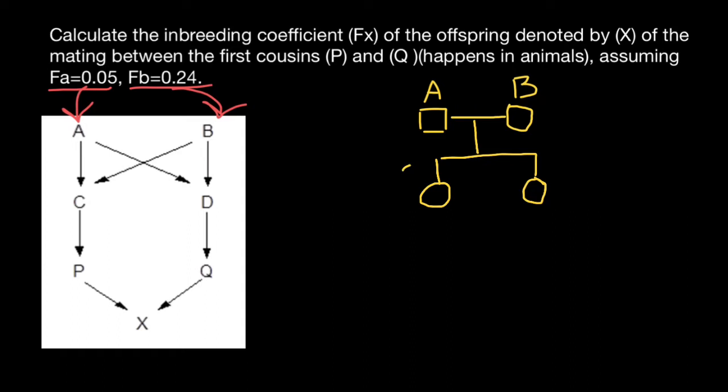So female C and female D are sisters. Now let's assume they got married. He's the husband of D, he's the husband of C. They're not shown here again because this is not important for our calculations. Only people who are part of the loops are important for calculation of inbreeding.